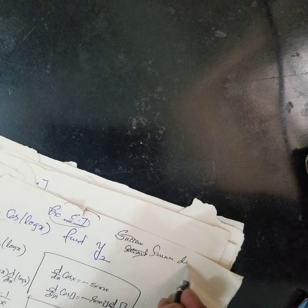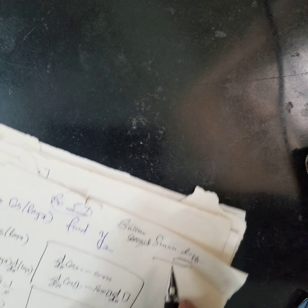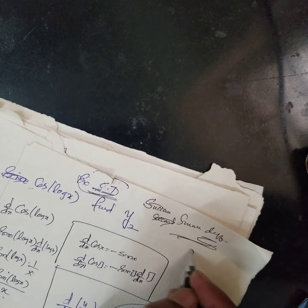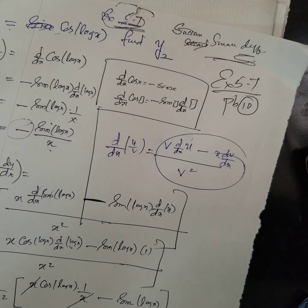Applying this — minus is kept outside. So we have u/v form: denominator squared into denominator times the differential coefficient of sin(log x), minus sin(log x) times d/dx of x. The differential coefficient of sin is cos.